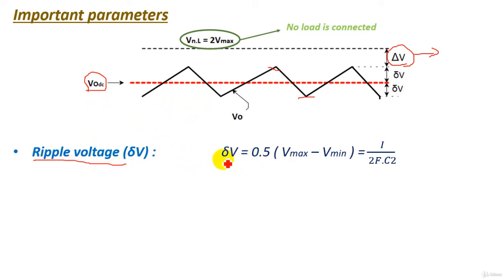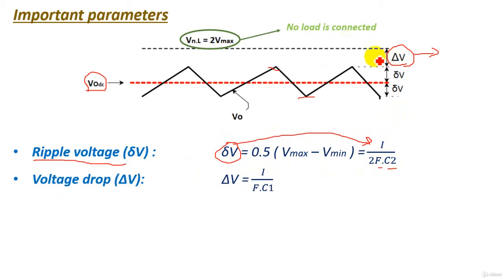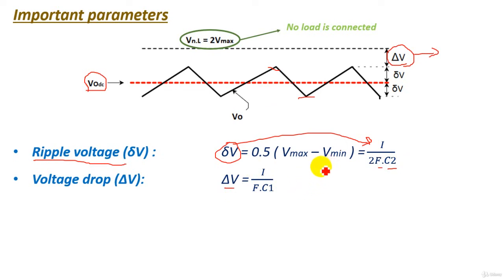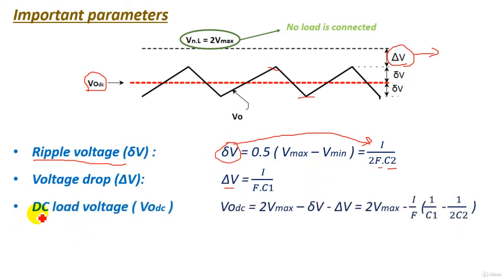The ripple voltage ΔV can be calculated from the formula: ΔV = (1/2) × (V_maximum − V_minimum), or alternatively from ΔV = 1/(2f·C2), where C2 is the capacitance of capacitor C2 and f is the supply frequency. The voltage drop can be calculated as ΔV = 1/(f·C1). So capacitor C1 controls the voltage drop, while capacitor C2 controls the voltage ripple. The values of C1 and C2 must be designed to give specific values of voltage drop and voltage ripple.